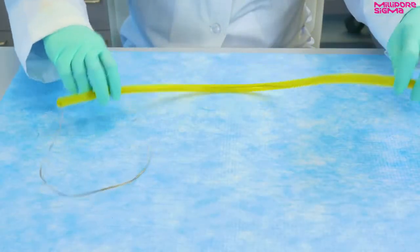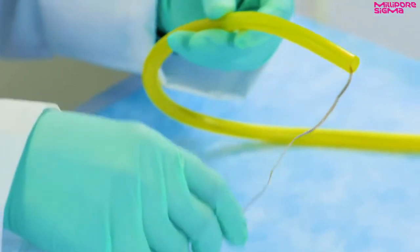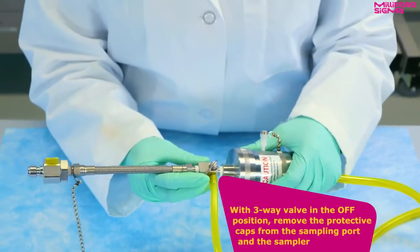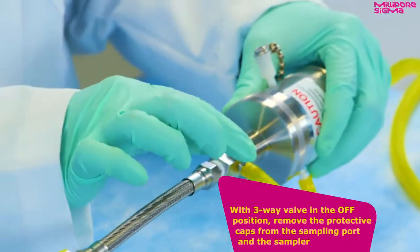This is the other end of the hose which should be placed into a collection container. With the three-way valve in the off position, remove the protective caps from the sampling port and the sampler.